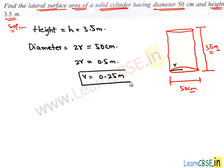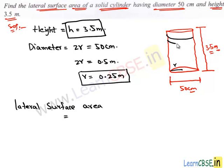By using these two, we can find the lateral surface area of the solid cylinder. Here the lateral surface area of this cylinder means its curved surface area. How do we get its curved surface area?